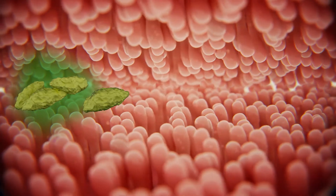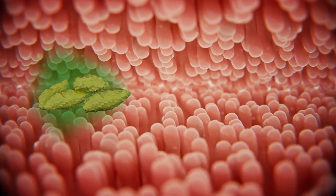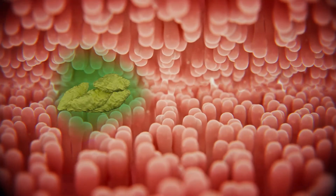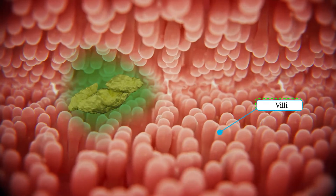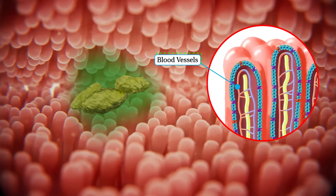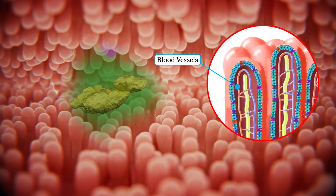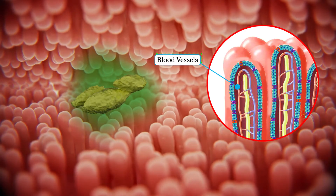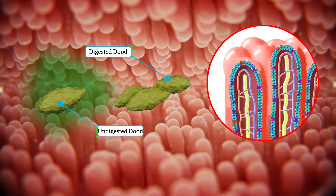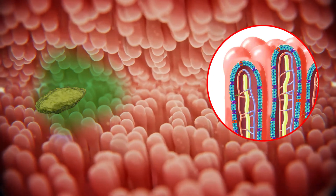The inner surface of the small intestine has finger-like projections called villi. The villi have an extensive network of blood vessels. The digested food is then absorbed into the blood.